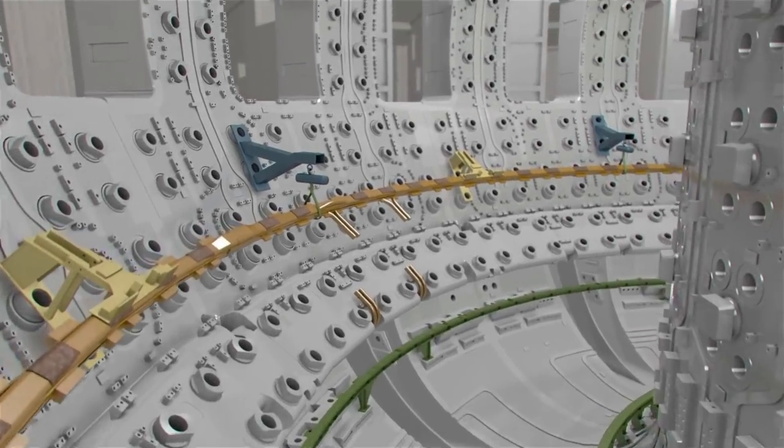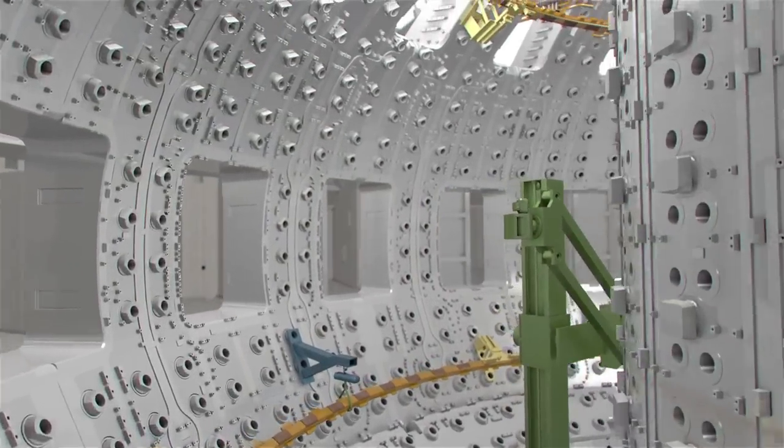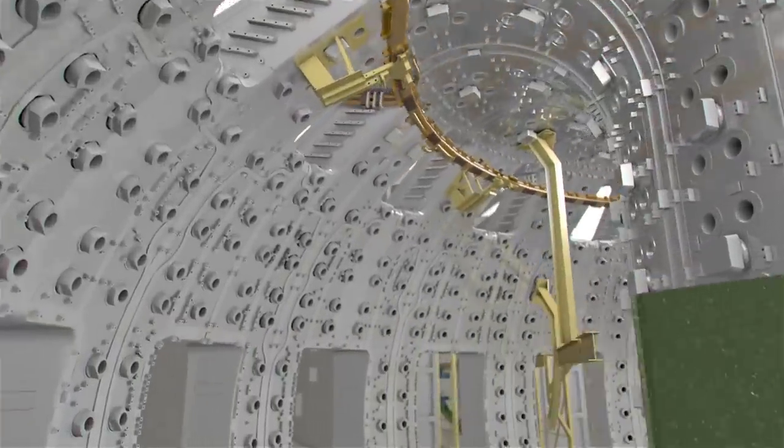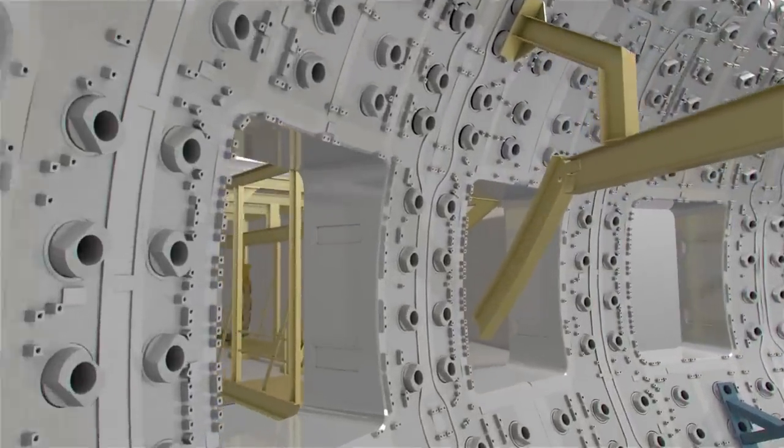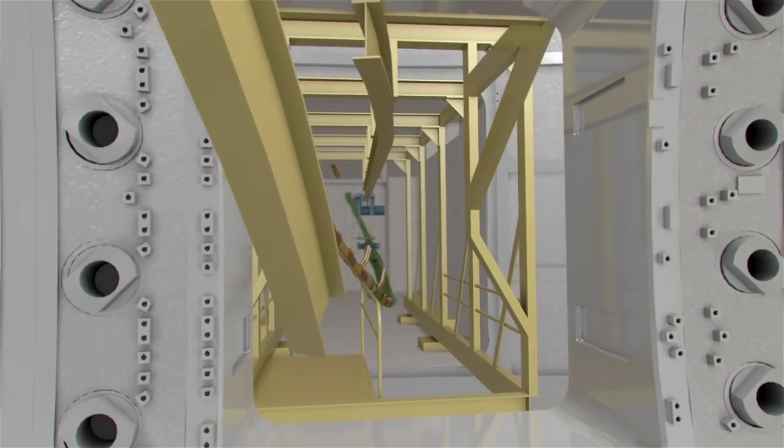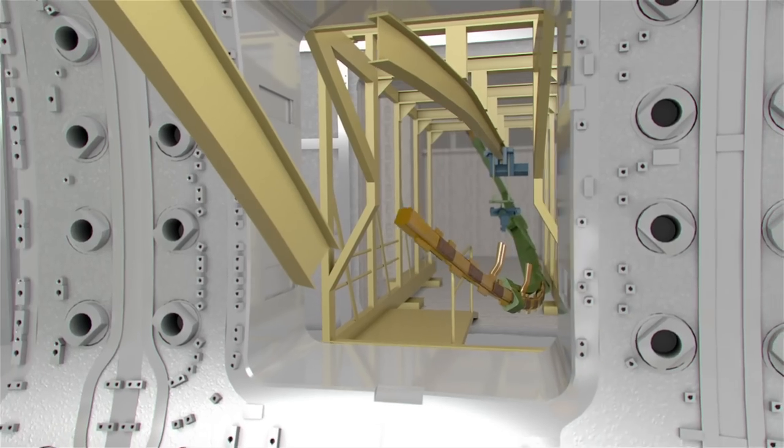Next in line are the vertical stability coils that will provide fast vertical stabilisation of the plasma. Each of these coils will be delivered in 120-degree sections with an approximate weight of 1.5 tonnes each. Each coil section is transferred from the assembly hall to the port cell using special-purpose trolleys capable of manipulating the coil and allowing it to pass through the port cell area.